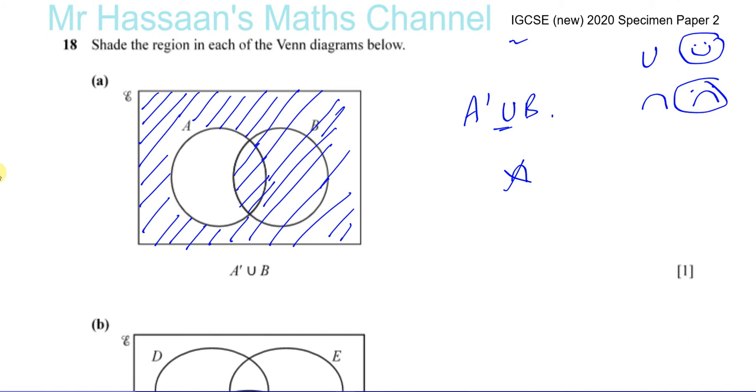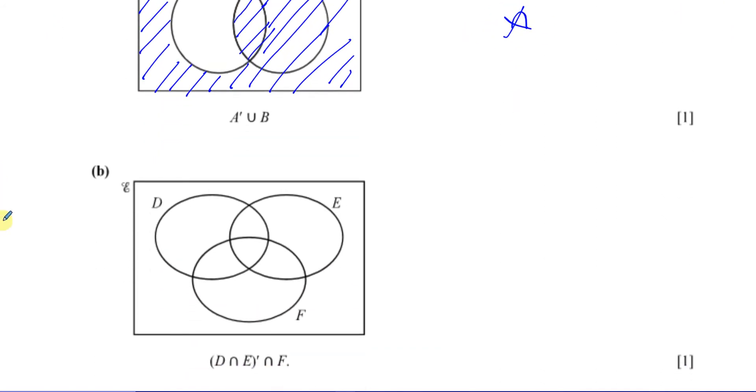Then we have this one where we got three of them together. And you've got D intersection E complement and intersection F. So all of these are frowny faces. So first of all, D intersection E complement. Now D intersection E would be this. I'm just going to shade it just to show you. That's D intersection E. So D intersection E complement is basically everything outside of this.